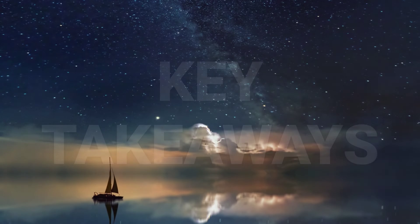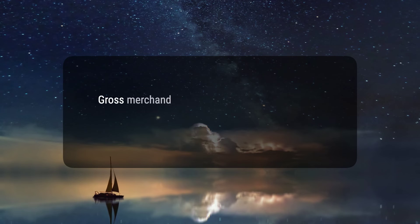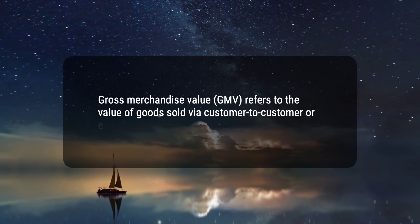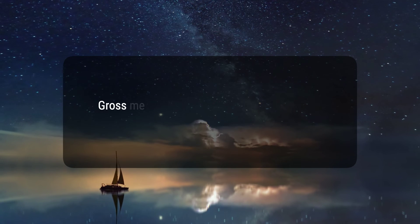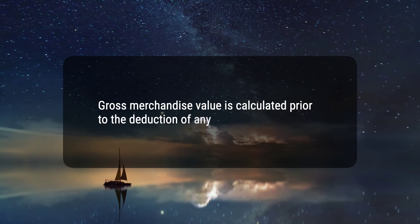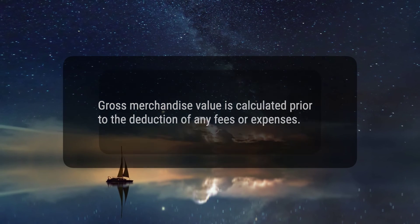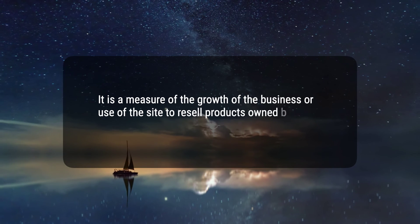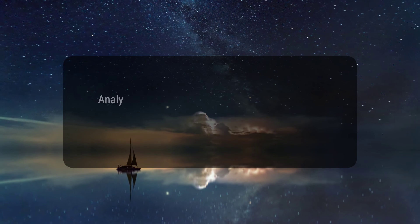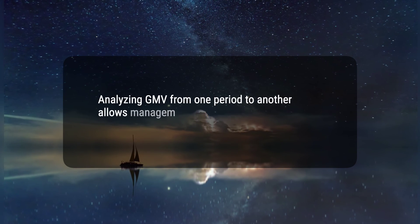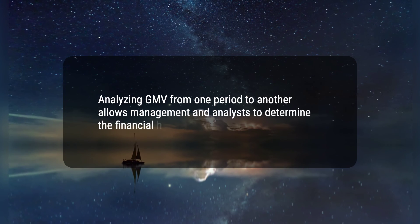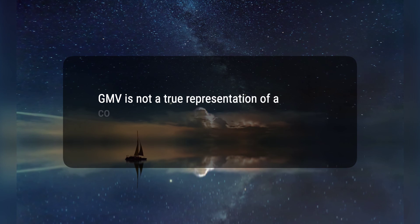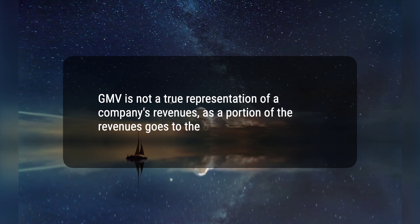Here are five key takeaways. 1. Gross merchandise value, GMV, refers to the value of goods sold via customer-to-customer or e-commerce platforms. 2. Gross merchandise value is calculated prior to the deduction of any fees or expenses. 3. It is a measure of the growth of the business or use of the site to resell products owned by others through consignment. 4. Analyzing GMV from one period to another allows management and analysts to determine the financial health of a company. 5. GMV is not a true representation of a company's revenues, as a portion of the revenues goes to the original seller.